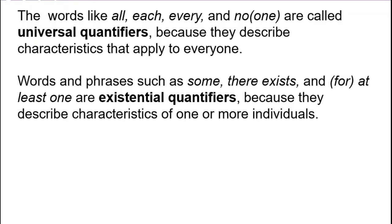Words like 'all,' 'each,' 'every,' and 'no one' are called universal quantifiers because they describe characteristics applying to everyone. Words and phrases such as 'some,' 'there exists,' and 'for at least one' are existential quantifiers because they describe characteristics of one or more individuals — they guarantee that a certain characteristic exists somewhere, but not for everybody.